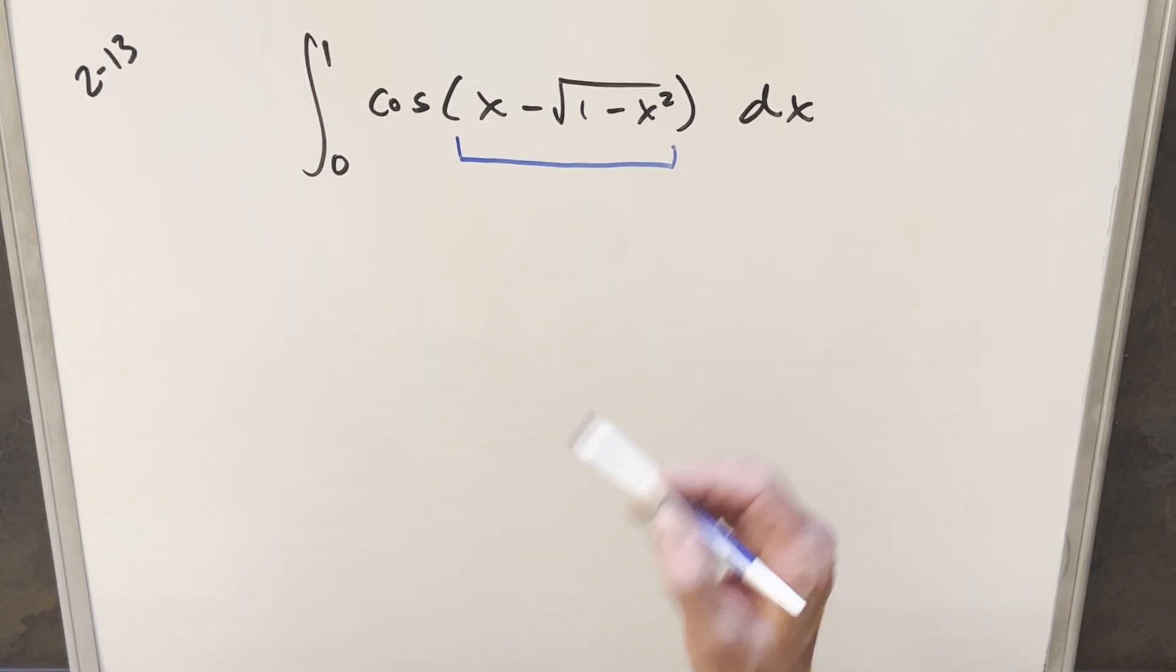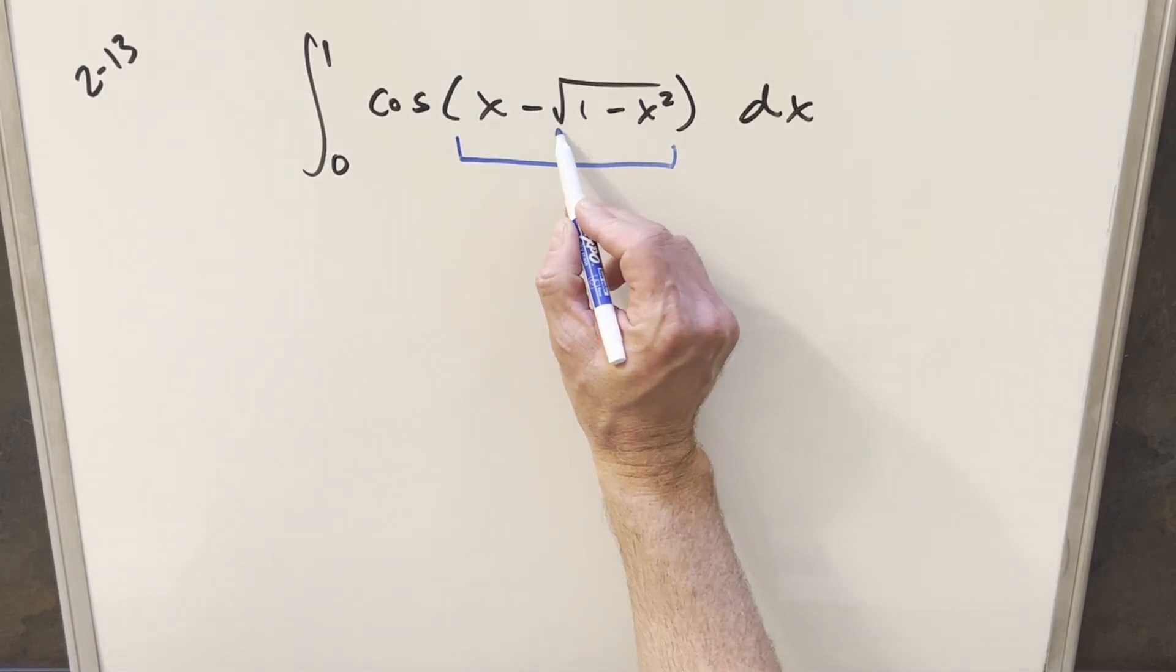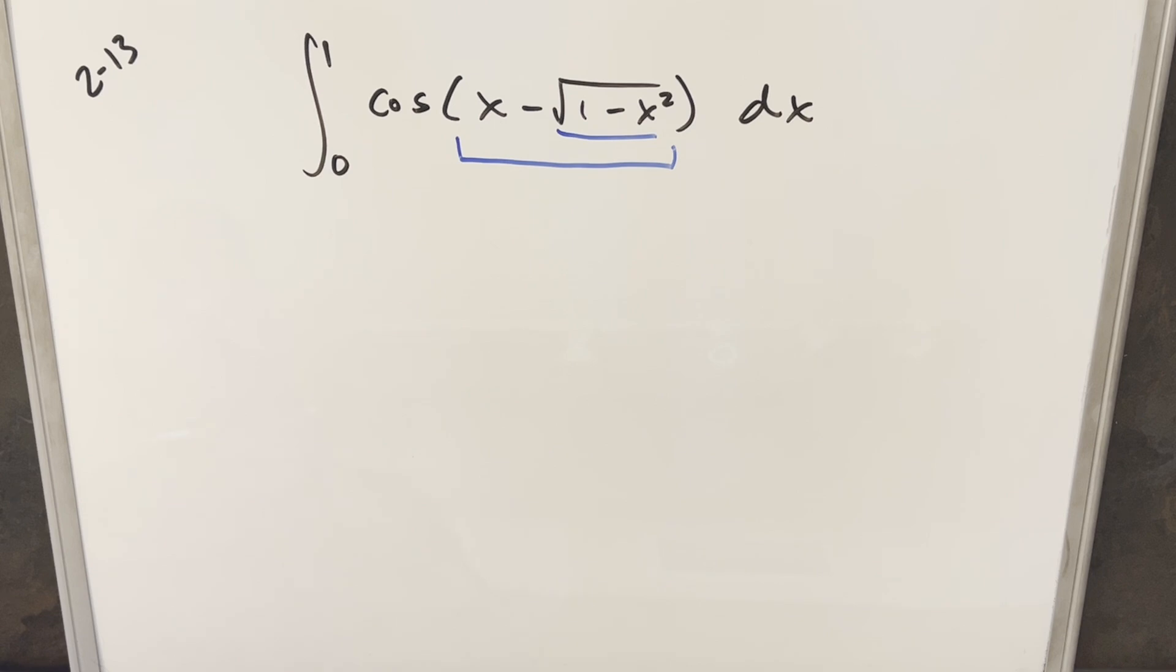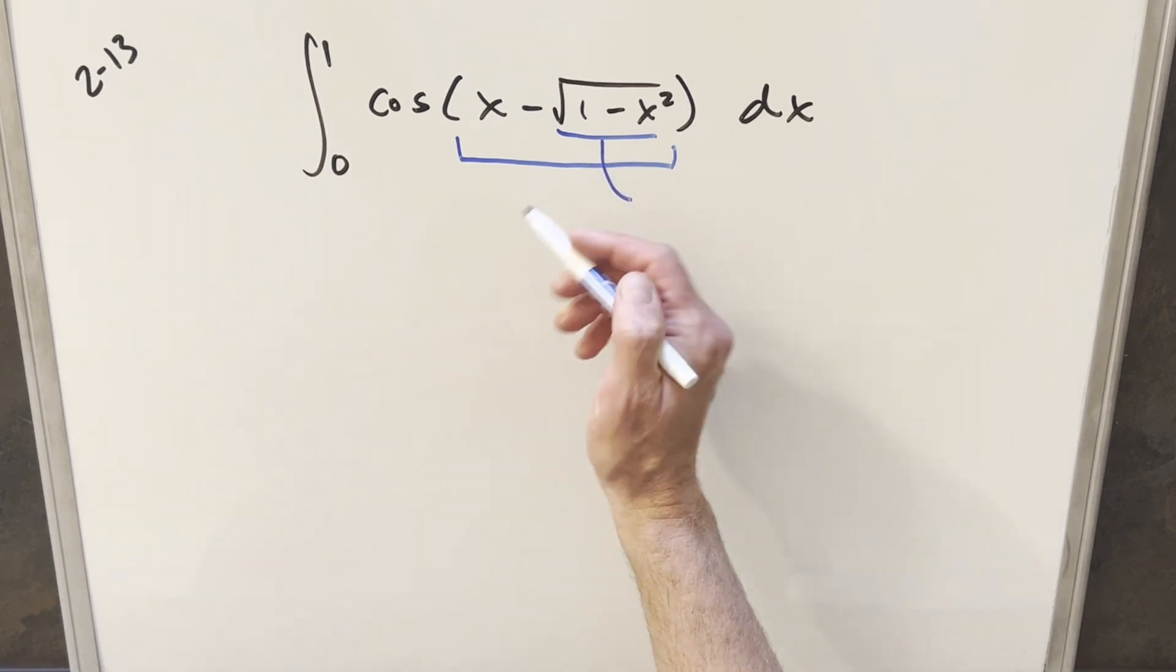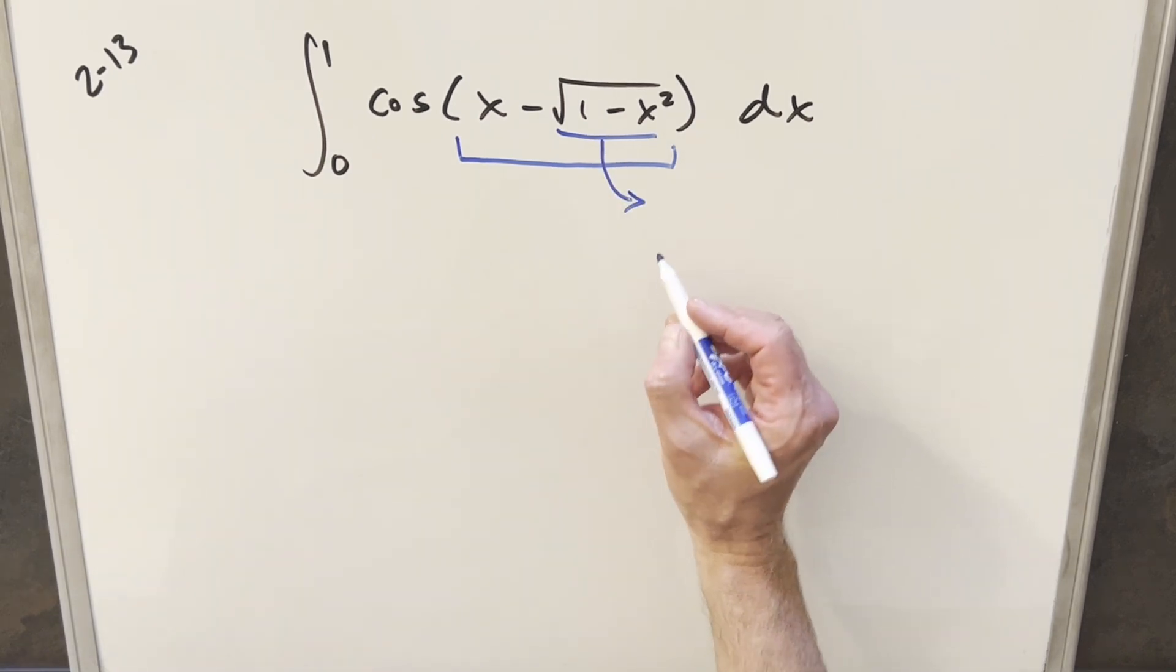Now the thing I did notice though was we've got this square root of 1 minus x squared. I noticed there's a few different ways to do this with substitutions, but what I like is this term right here is in our form for a trig substitution.